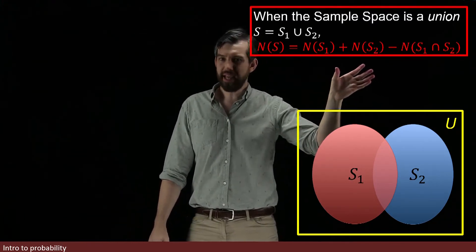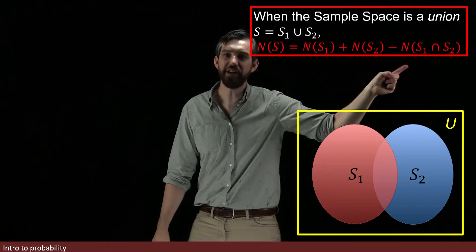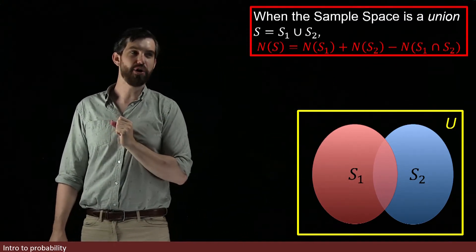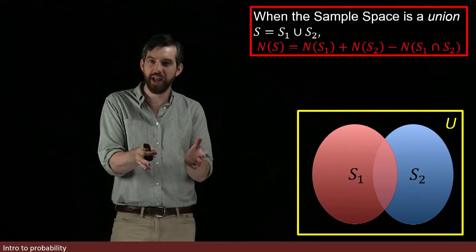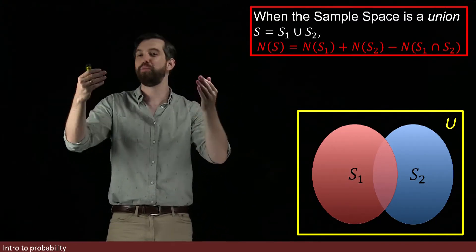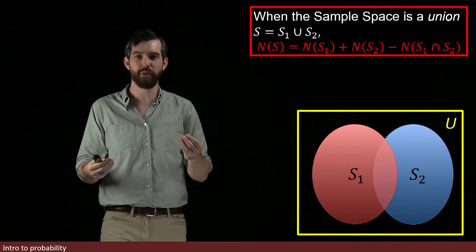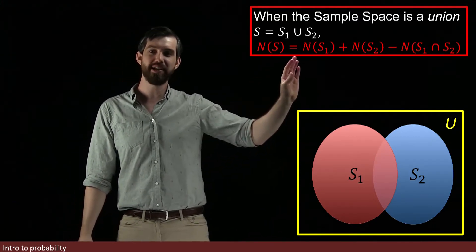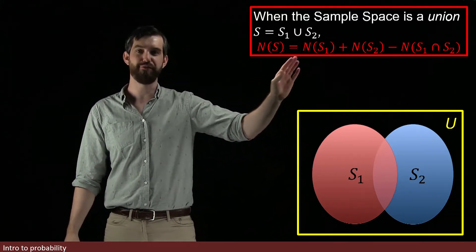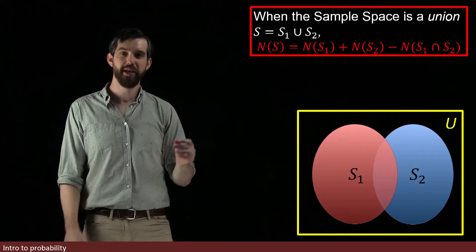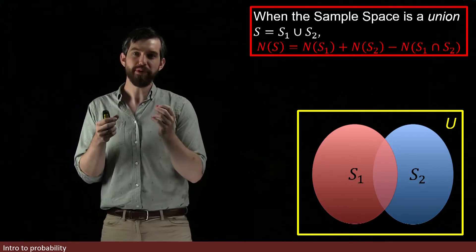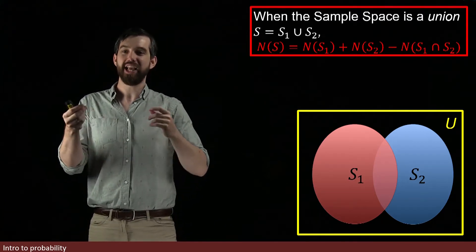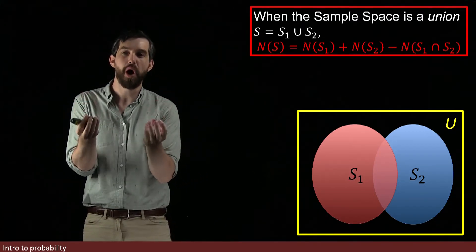What I need to do is eliminate the double counting by subtracting off the number in the intersection. After I subtract off one copy of the number in the intersection, I'm going back from a double counting to my appropriate single counting. In other words, that the elements in the intersection are only counted once in this formula as they should be. This tells me a way that I can figure out the number of elements in a union of two things that are not disjoint.